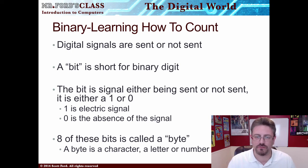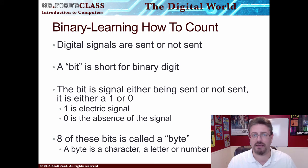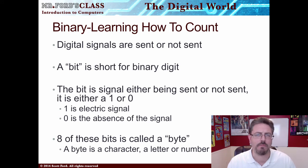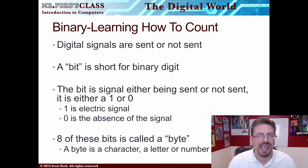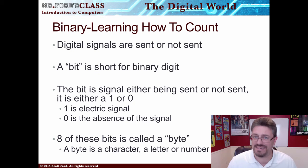Eight of these bits are called a byte. A byte is an actual character — this is a letter or a number. So a bit is a signal or a non-signal, it's either sent or it's not sent. To make sense of this, to actually create a letter or a number, you need eight of these bits to create something called a byte. And the byte is a single character — it's the A, B, C, D, or 1, 2, 3.